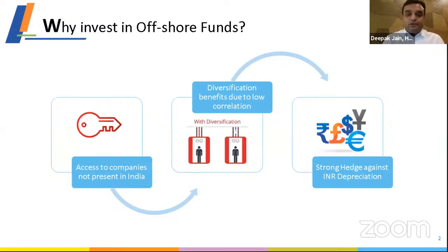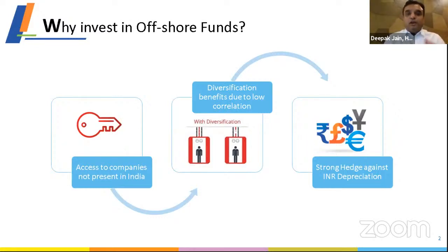If you look at the UK, a UK investor typically moves around 30 to 40 percent of investments globally. US investors invest globally, Japanese investors invest globally. One key benefit of investing globally is access. The idea of investing is to participate in the growth of a business. If sales are happening, companies are benefiting from that opportunity, you want to participate as an equity investor or lend as a debt investor to companies doing well.